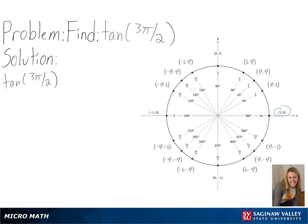So we will start at (1, 0) and then move counterclockwise until we have traveled the distance of 3π over 2.